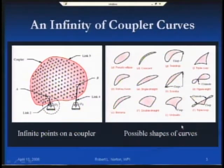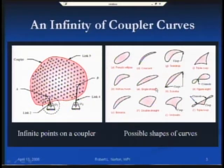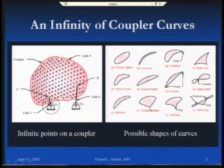Some of the more interesting features useful from an engineering standpoint are that many of these curves have an approximate straight-line segment. You cannot get an exact straight line with four bars — you have to go up to six bars or a geared five-bar to get an exact straight line — but for engineering purposes, four-bar linkages can give you a sufficiently accurate straight line. Another useful feature is the cusp and its cousin the crunode.